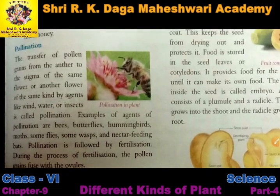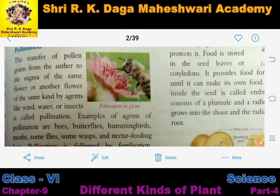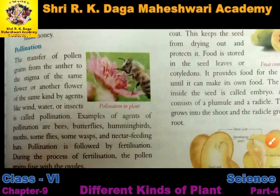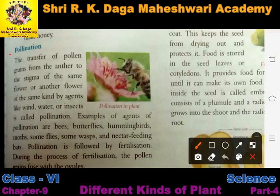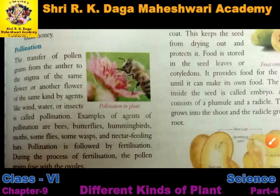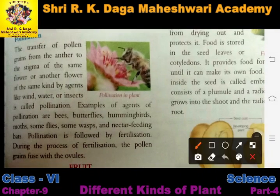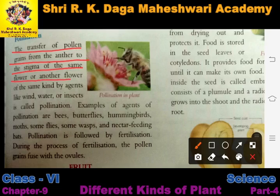Now let us discuss pollination briefly. The transfer of pollen grains from the anther to the stigma of the same flower or another flower of the same kind, by agents like wind, water, or insects, is called pollination.